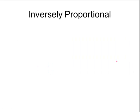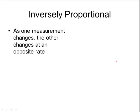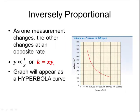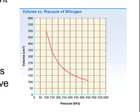Measurements can also be indirectly or inversely proportional — as one measurement changes, the other changes at an opposite rate, meaning they change in different directions. Mathematically, y is proportional to 1/x, or k = x × y, where k is a constant. If you multiply two measurements x and y and always get the same constant value, they are inversely proportional. When graphed, inversely proportional measurements always produce a curve — specifically a hyperbola. For example, the volume versus pressure graph of nitrogen shows that as pressure increases from 100 to 200 to 300, the volume gets smaller and smaller — as pressure goes up, volume goes down, changing in opposite directions.